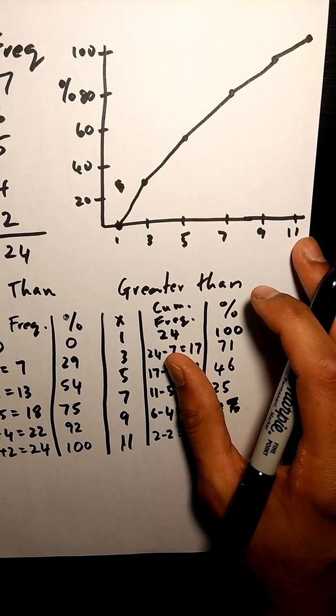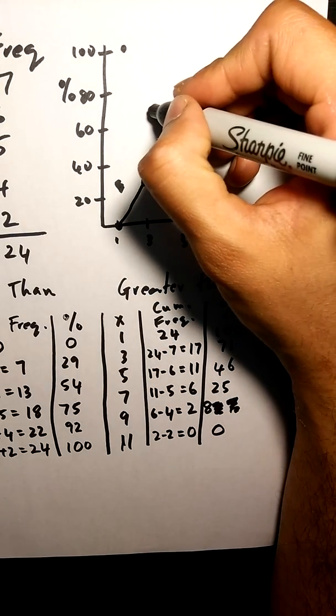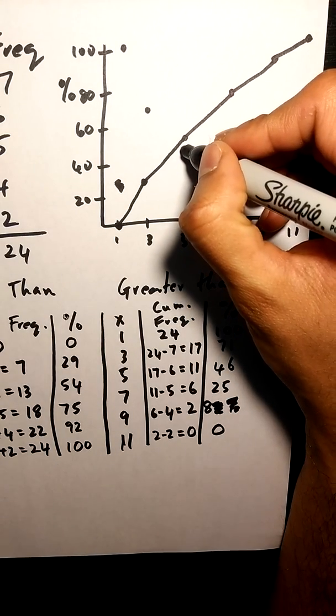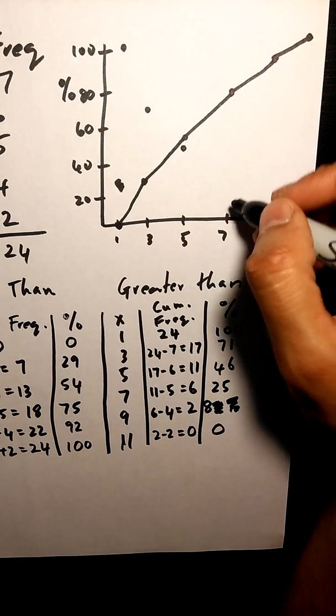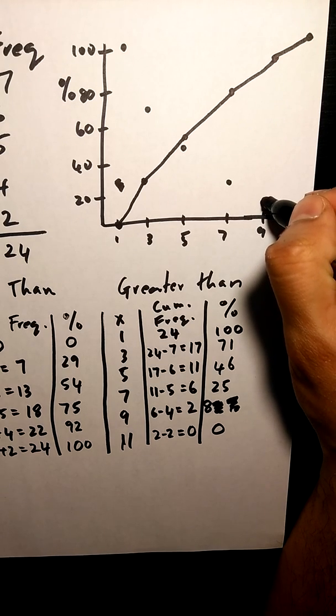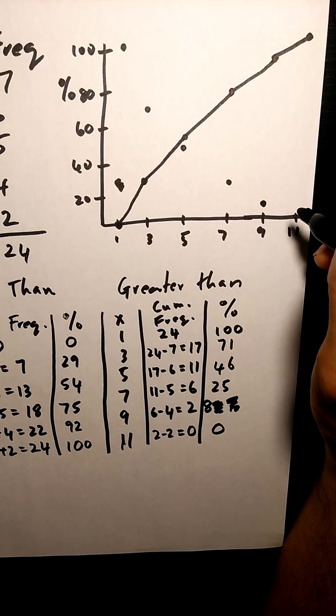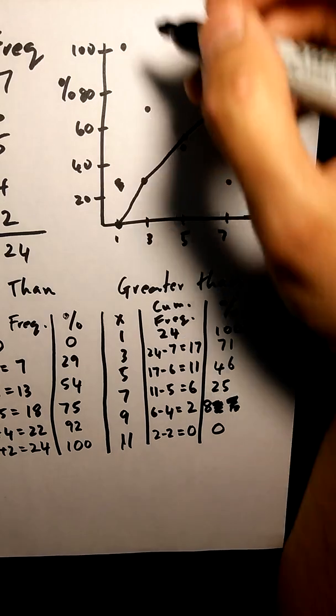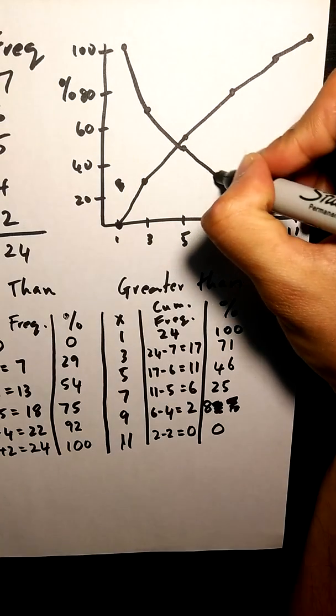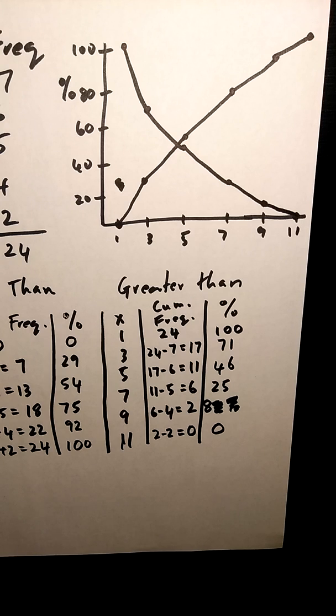Then I'm going to do the greater than table. So it was 1, 100; 3, 71; 5, 56; 7, 25; 9, 8; and 11, 0. And that is a cumulative frequency less than and greater than graph.